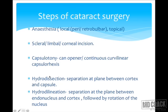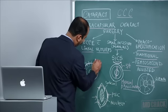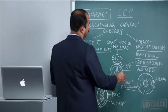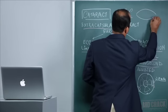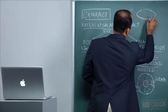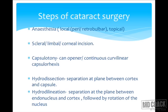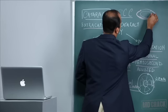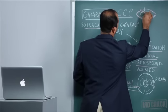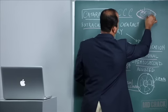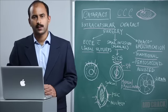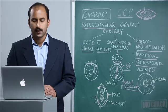Hydrodissection is the next step once the circular capsular opening is achieved. A fluid wave is injected with a cannula under the capsular opening, which dissects between the cortex and the capsule, achieving separation of adhesions and helping mobility of the nucleus. Hydrodelineation reduces the size of the endonucleus by injecting between the cortex and the nucleus, helping remove the nucleus through a smaller incision or targeting the lens in phacoemulsification.